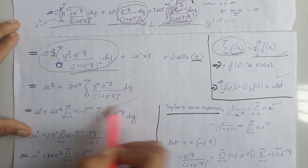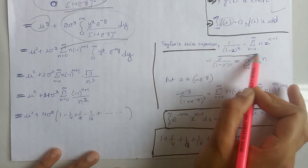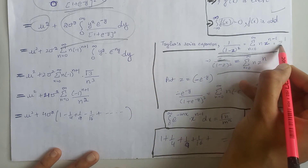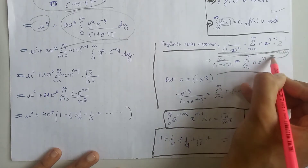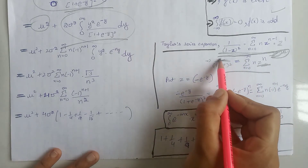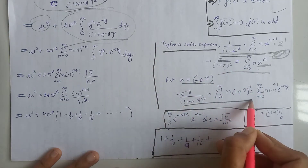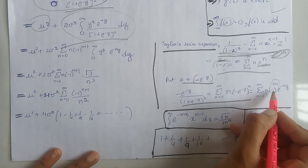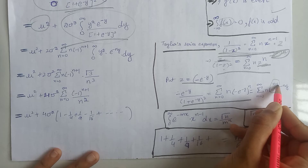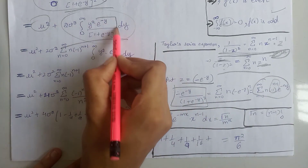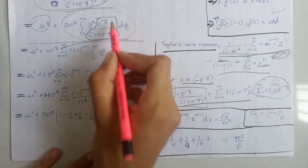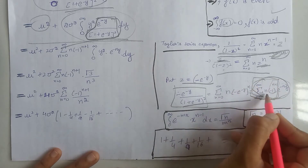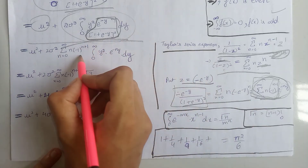We use the Taylor series expansion, and on multiplying both sides by z, we get z raised to power n. Putting z equals minus e raised to power minus y in both sides, we get the corresponding expression. We can write minus 1 raised to power n separately. For calculation purposes, at the place of n we write n plus 1. This gives us the value of this term, meaning that in the whole equation, at the place of this term we write this value. These two terms are constant, independent of y, so we write them outside the integral.